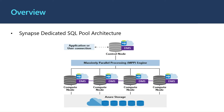Before jumping into PolyBase and Copy Command, we need to understand how Synapse Dedicated SQL Pool architecture works. Synapse Dedicated SQL Pool uses a node-based architecture. Applications connect and issue T-SQL commands to a control node, which hosts a distributed query engine that optimizes queries for parallel processing, then passes operations to compute nodes to do their work in parallel. The compute nodes store all user data in Azure Storage and run the parallel queries. The Data Movement service is a system-level internal service that moves data across nodes as necessary to run queries in parallel and return accurate results.